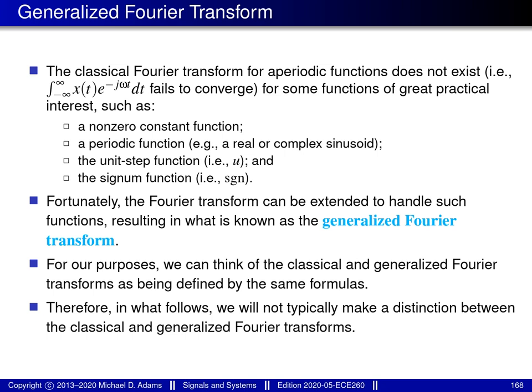By allowing generalized functions to appear in the Fourier transform calculations, we can handle a greater variety of functions with the Fourier transform, including non-zero constant functions, periodic functions, and so on. Although technically speaking the classical and generalized Fourier transforms are not the same thing, we can think of them as being the same for the purposes of this course, since their differences only become apparent when the underlying math is studied in much greater depth than what we consider here. For this reason, I'll typically not make any distinction between the classical and generalized Fourier transforms, and I'll simply refer to both transforms as the Fourier transform.